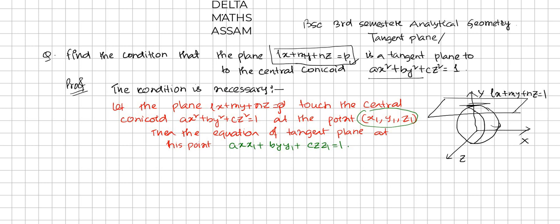Now, comparing this equation with the given plane Lx plus My plus Nz equal to P — they are identical. So comparing equations 1 and 2, we get: the x-coefficient gives ax1 proportional to L, the y-coefficient gives by1 proportional to M, the z-coefficient gives cz1 proportional to N, and the constant term gives 1 proportional to P.